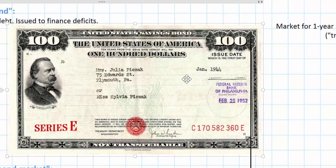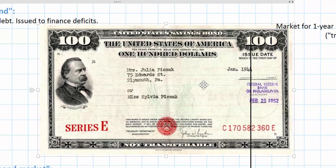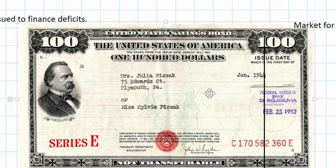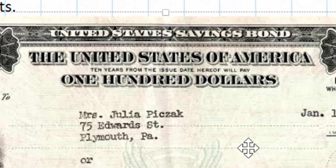Today bonds are traded and bought and sold electronically, but in the old days — this bond is from 1952 — the purchaser of a bond might have actually received a paper certificate that looks something like this. You can see this is a $100 US government bond that in 10 years will pay the owner $100. It says: '10 years from the issue date hereof, the United States of America will pay $100.'